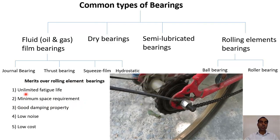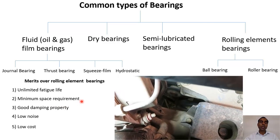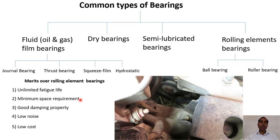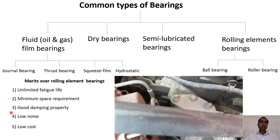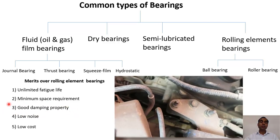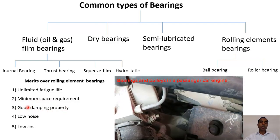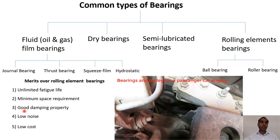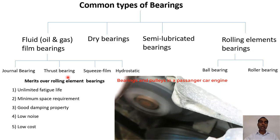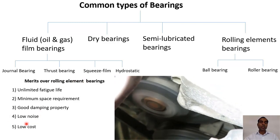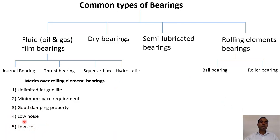Fluid film bearings also have minimum space requirements, since all that is needed is a thin film of lubricant between the shaft and the bearing. They also provide good damping — the lubricant absorbs vibrations, resulting in low noise as there is no rolling element. And because they are not very complex, their cost is also very low.